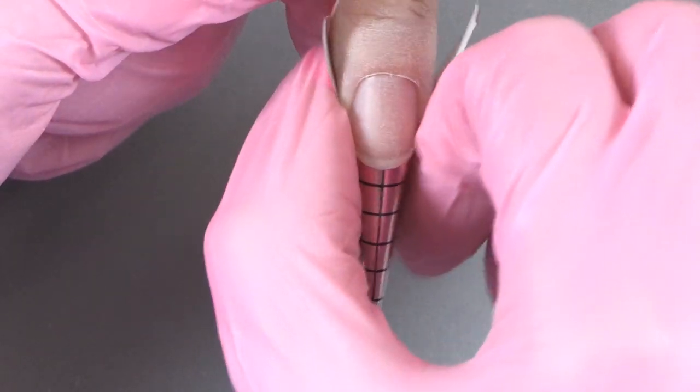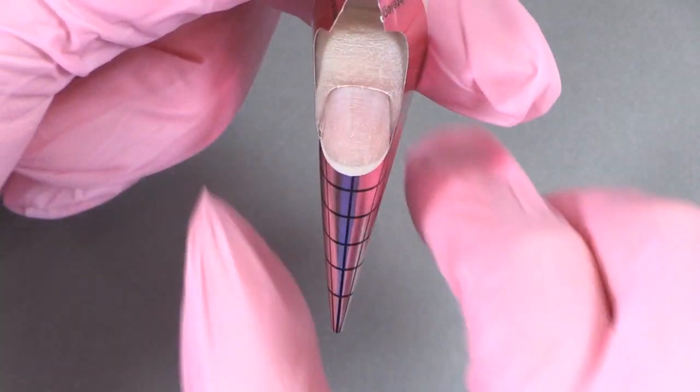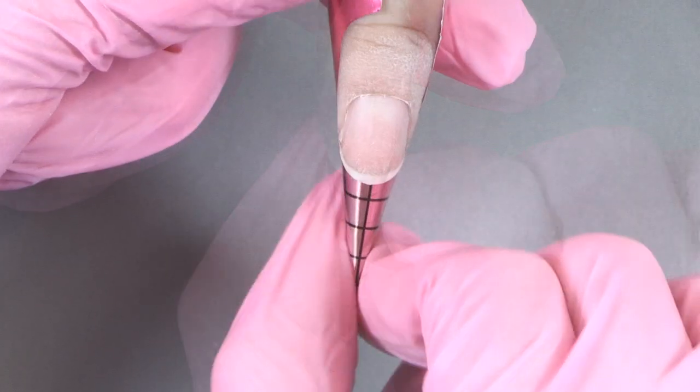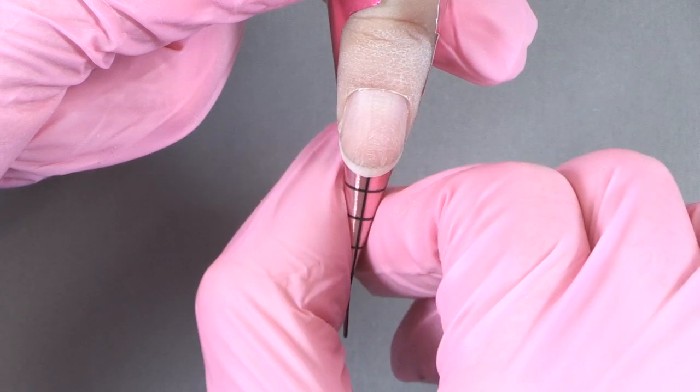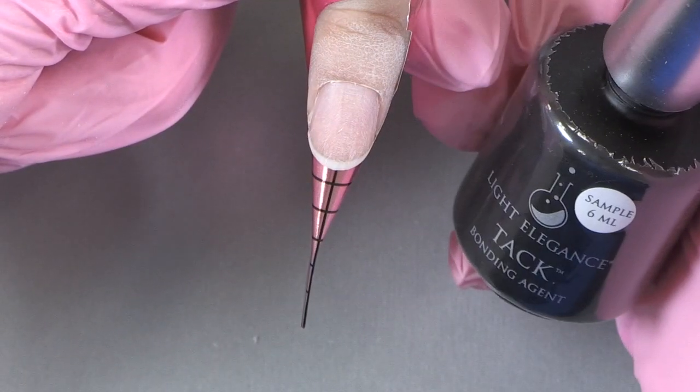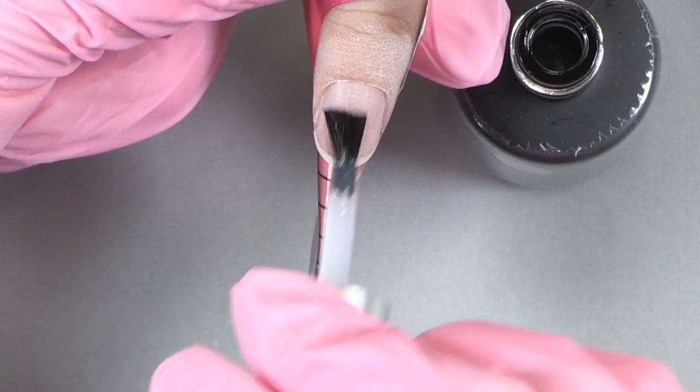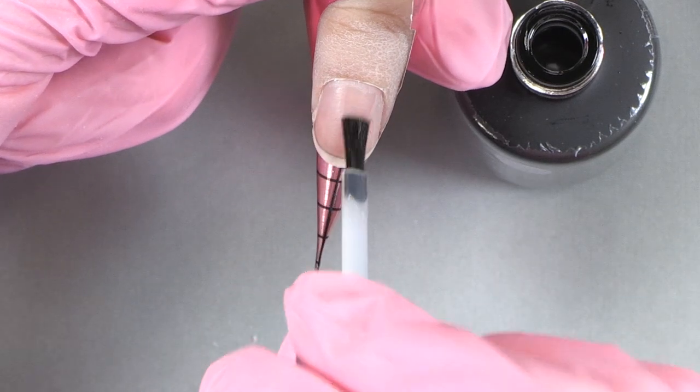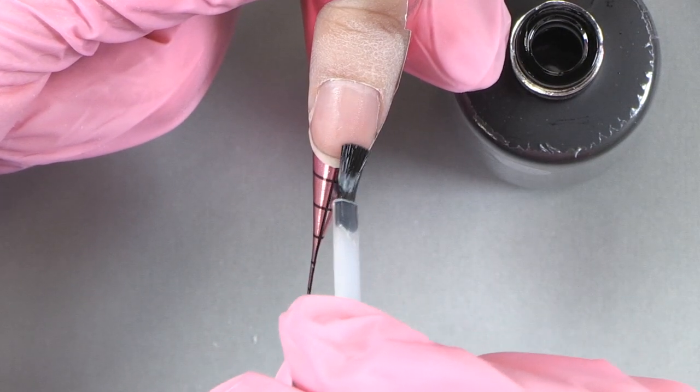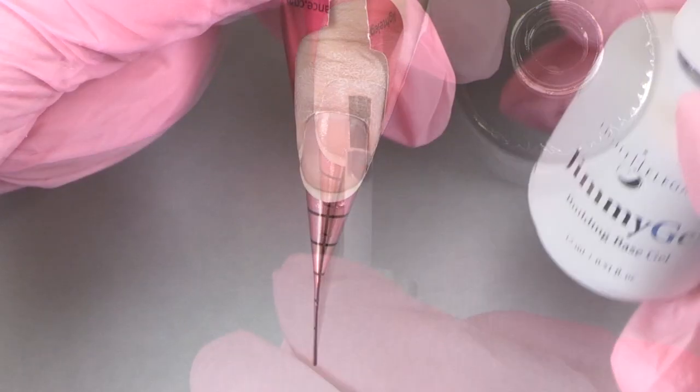Putting on the Light Elegance form, your nail is prepped and clean and ready for that extension. We're going to put on the Light Elegance tack. Put a thin amount of tack onto your brush and get that tack nice in there, into the grooves of the nail. Cure the tack for 30 seconds in the LED dot.